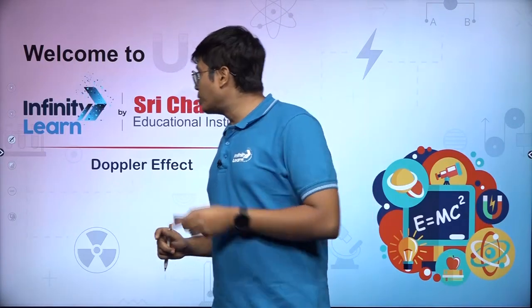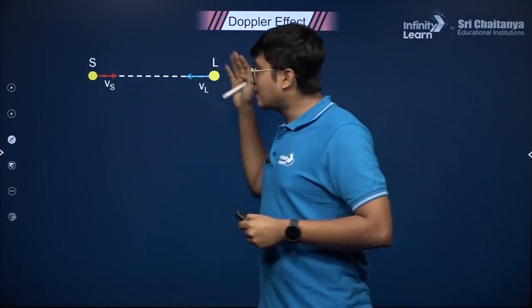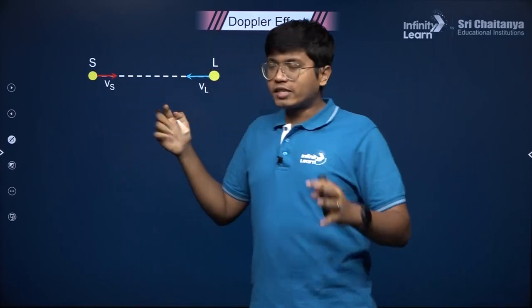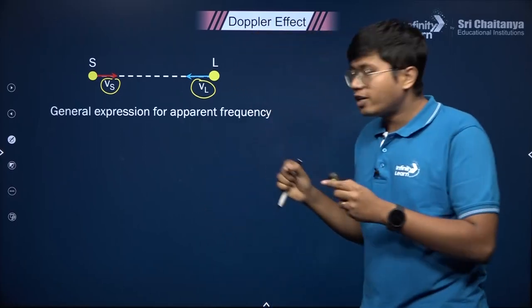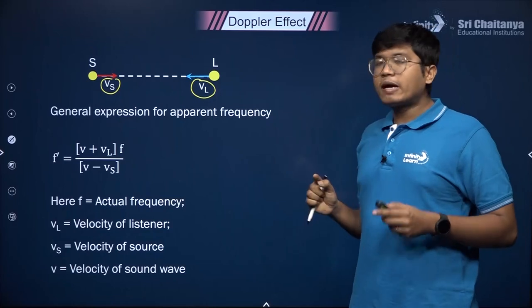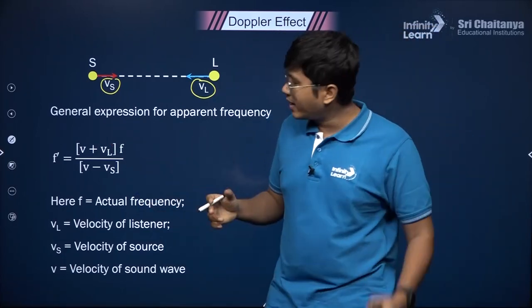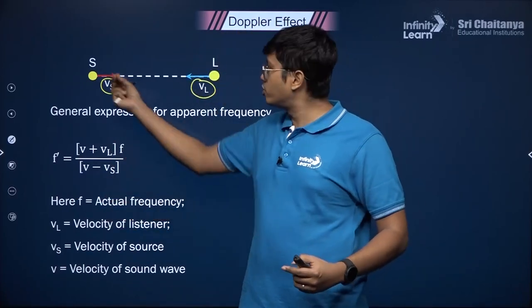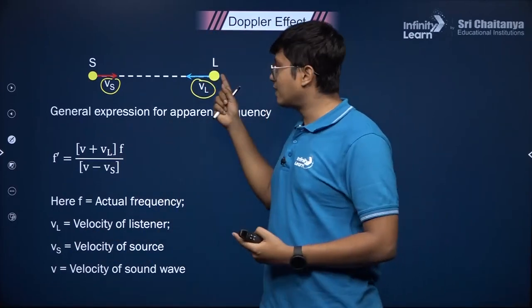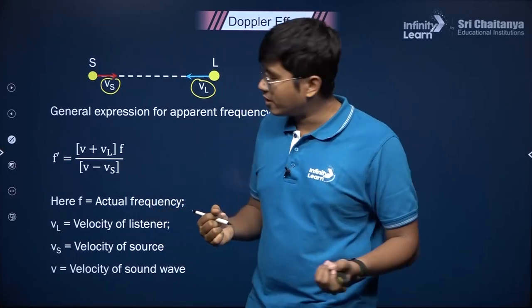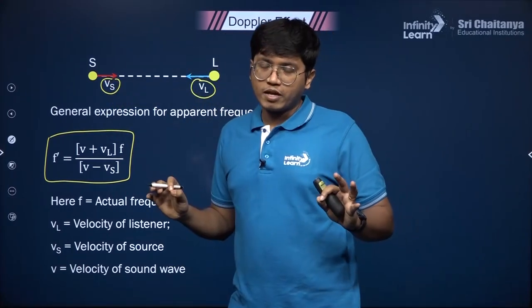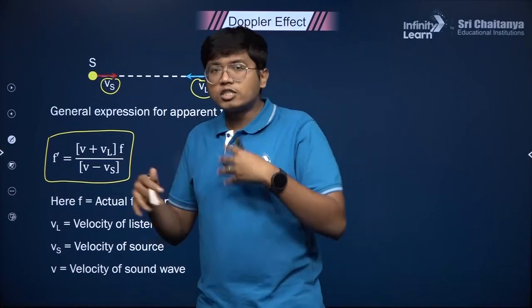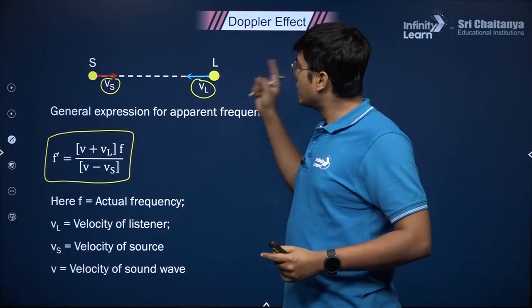So let's see what that case is and what that formula is. This is the case where the source and the listener are coming towards each other. Vs is directed towards the listener, which is the speed of the source, and Vl, the speed of the listener, is directed towards the source. The general expression is: F' = (V + Vl) / (V - Vs) × F. Here F is the actual frequency the source emits, F' is the frequency as heard by the listener, and Vs and Vl are the speed of source and speed of listener.